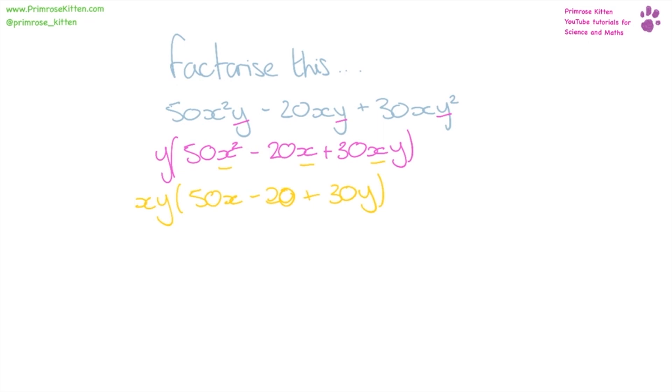Now there's something else that they all have in common. They're all divisible by 10. So we can now take 10 outside the brackets and put it next to our xy. So 50x divided by 10 gives us 5x. 20 divided by 10 gives us 2. 30y divided by 10 is going to leave us with 3y inside the brackets.